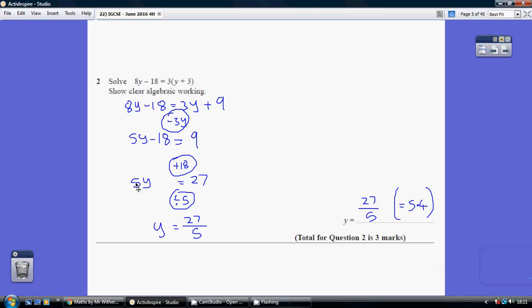How do we undo a times by 5? We divide by 5, so we get y equals 27 over 5 equals 5.4.